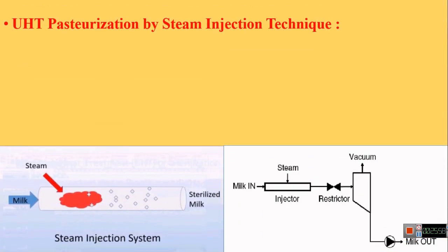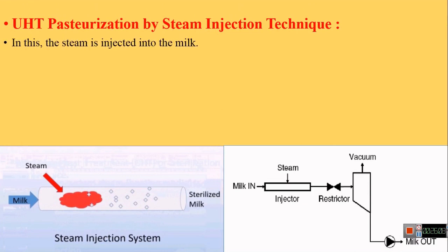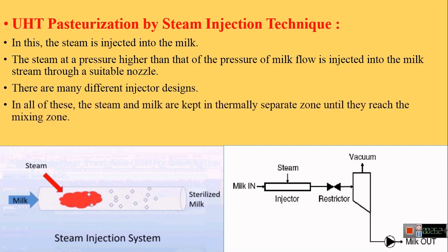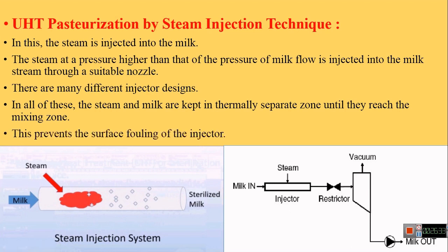In the UHT steam injection technique, steam with pressure higher than that of the milk flow is injected into the milk stream through a nozzle. There are different designs of steam injectors; in all of these, the steam and milk are kept in separate zones until they reach the mixing zone. This prevents surface fouling of the injectors. You can see in the diagram the stream of milk flow into which steam with high pressure is injected.